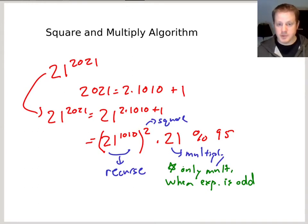So that's it. That's the square and multiply algorithm. It's a recursive algorithm, and it's kind of doing divide and conquer in terms of dividing the exponent in half.